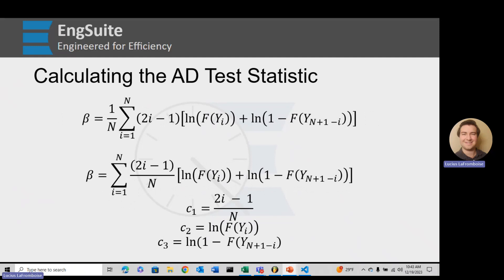So we're going to break this down a little bit, and we're going to throw the 1 over N inside of our summation. That way we can pull out C1 of 2I minus 1 over N. We're going to take this natural log of the cumulative distribution function of YI and call it C2. We'll do the same, the 1 minus, and we'll call that C3.